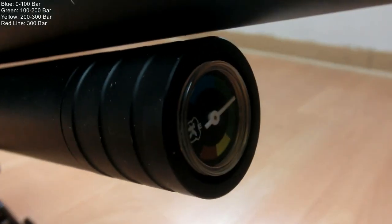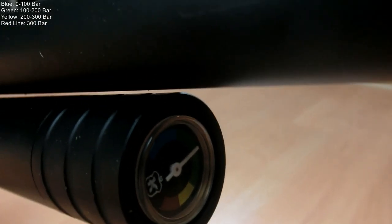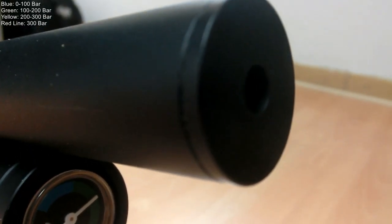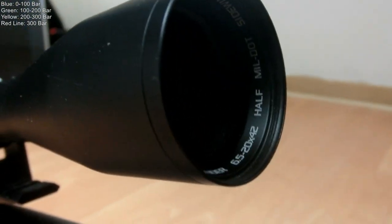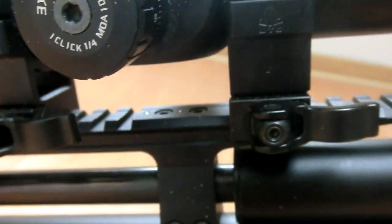This is an early model, so it has the color sheen pressure gauge: blue indicating 0 to 100, green 100 to 200, yellow 200 to 300 bars, and the red line indicating the non-advisable maximum of 300 bar.